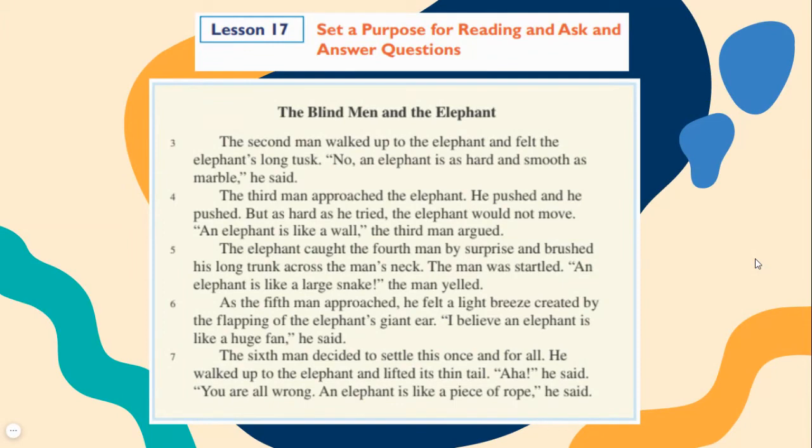The sixth man decided to settle this once and for all. He walked up to the elephant and lifted its thin tail. Aha, he said. You are all wrong. An elephant is like a piece of rope, he said.